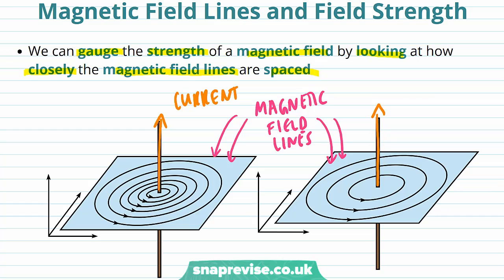And in these two examples, one of the magnetic field lines are very dense, whereas these magnetic field lines are much more sparse.